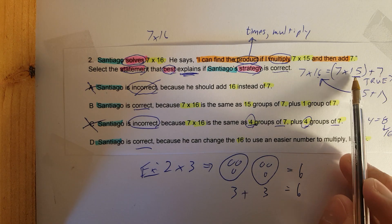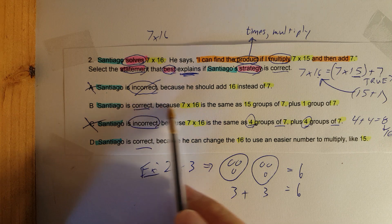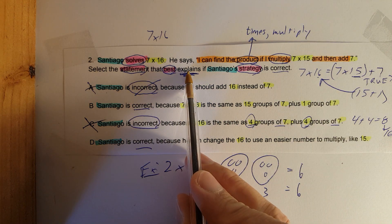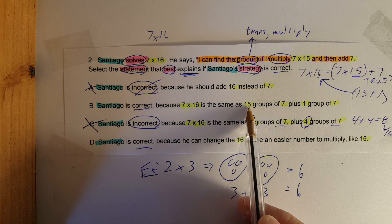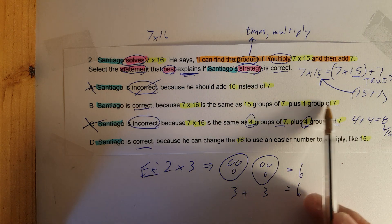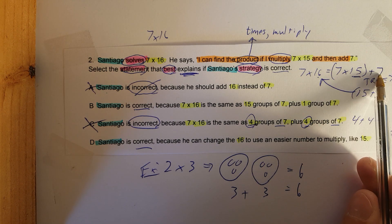So now since we know Santiago is correct because 15 groups plus one more group is 16 groups, which one of these statements best explains? Let's see. Santiago is correct because 7 times 16 is the same as 15 groups of 7 plus 1 group of 7. Right there - 15 groups of 7 plus 1 group of 7. This makes sense.